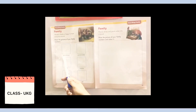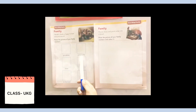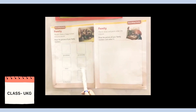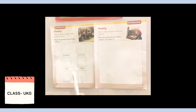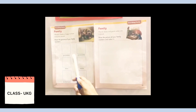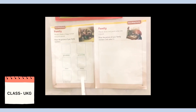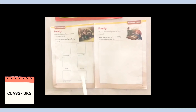किस-किस की? अपने grandfather की — दादू की; अपनी grandmother की — दादी की; father — papa की; mother — mama की; brother या sister की picture, and यहाँ पे self — मतलब आपके picture. आपको six pictures यहाँ पे paste करनी है, right?